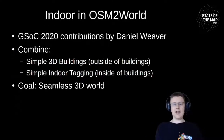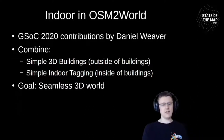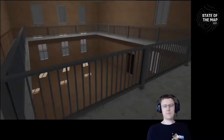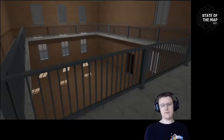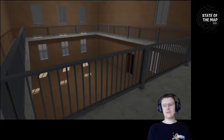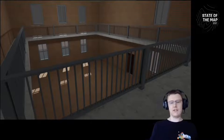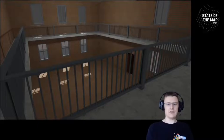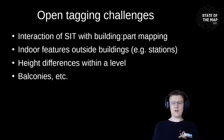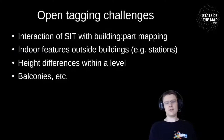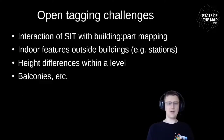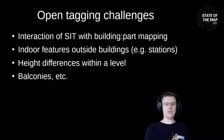Indoor rendering in OSM2World was added as part of Google Summer of Code 2020. The goal is a seamless 3D world combining Simple 3D Buildings and Simple Indoor Tagging data. This screenshot shows the inside of a room — a seamless 3D world allows you to look out of buildings through windows, open doors, and other connections between inside and outside. The basics are working, but open challenges remain including interaction with building-path mapping and indoor features outside buildings such as at railway stations.